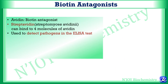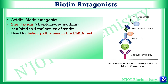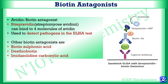Avidin is a biotin antagonist. Streptavidin can bind to 4 molecules of avidin and is used to detect pathogens in the ELISA test — enzyme-linked immunosorbent assay. Other biotin antagonists include biotin sulfonic acid, des-thiobiotin, and imidazolidine carboxylic acid.